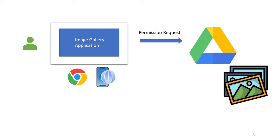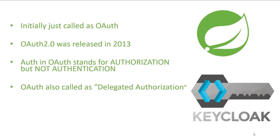OAuth is a standard way of providing authorization — that means permission for service A (the image gallery application) to access service B (the user's Google or Facebook account). When the framework was initially developed it was just called OAuth, but later an updated version 2.0 was released in 2013, which is called OAuth 2. Also, the 'A' in OAuth stands for authorization, not authentication, because we are providing authorization for a service to access another service. For this reason, OAuth 2.0 is also called delegated authorization.